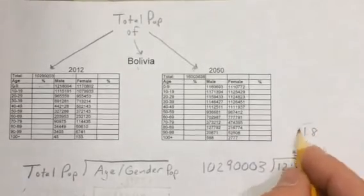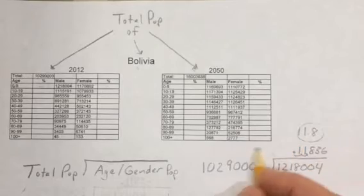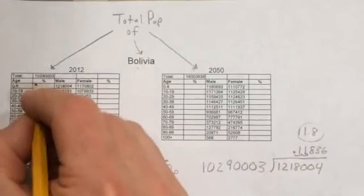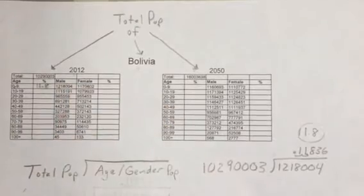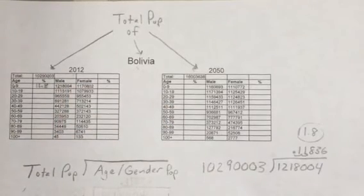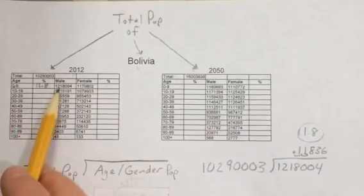We're going to round up. And that number would then go over here. Eleven point eight. So eleven point eight percent of their population in Bolivia is age zero to nine.